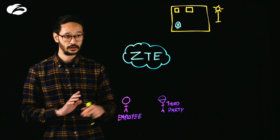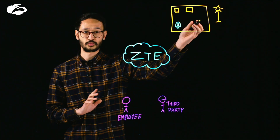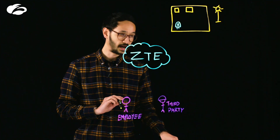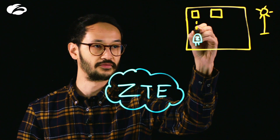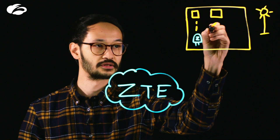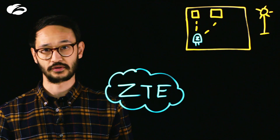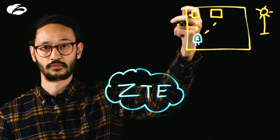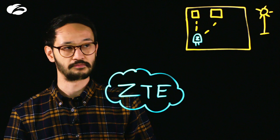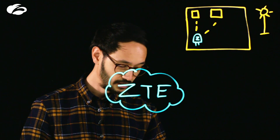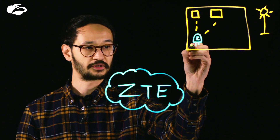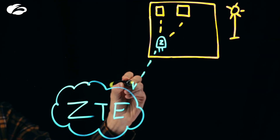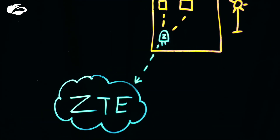In this case here we have this wind farm, and we have a Zscaler app connector that has access to these individual elements within this specific location. So here we've got wind turbine A, wind turbine B, and what happens is the Zscaler app connector makes an outbound request to the zero trust exchange.